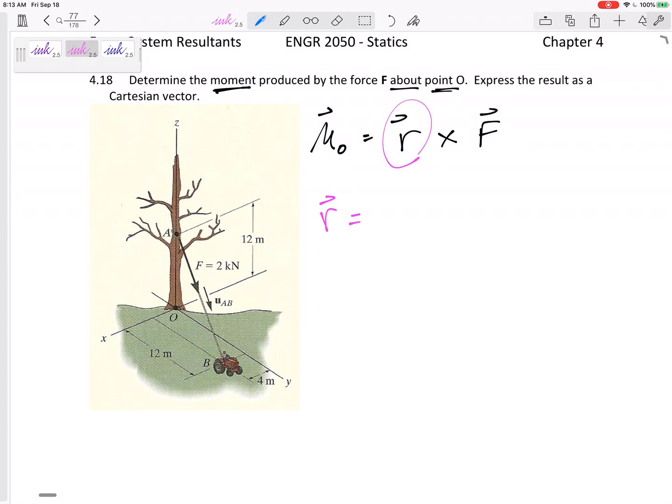R. What is my R? R needs to go from the point, alright? I want the moment about point O, to the force. So we could go from O to A, right? We could go R O to A, and so that's going to be 12K. Or we can actually go from the point to anywhere on the force, anywhere on the line of action of the force.